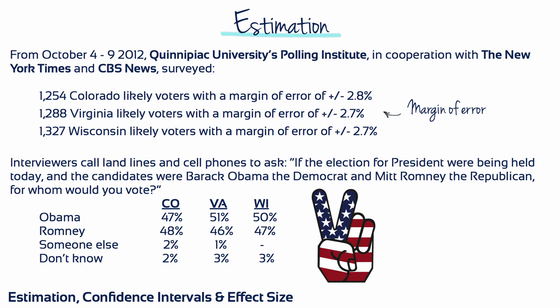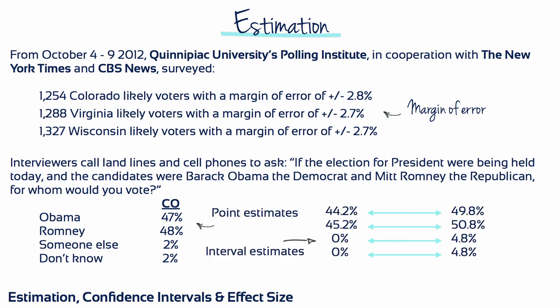In October 2012, Quinnipiac University's Polling Institute surveyed likely voters in Colorado, Virginia and Wisconsin, asking whom they would vote for in a presidential election between Barack Obama and Mitt Romney. 47% of the Colorado sample said they would vote for Obama, 48% said they would vote for Romney, 2% said they would vote for someone else, and 2% said they didn't know. A point estimate would infer that these voting percentages would be true of all likely voters in Colorado, whereas the interval estimate would take the reported margin of error of plus or minus 2.8% and estimate a range of plausible values for this population.